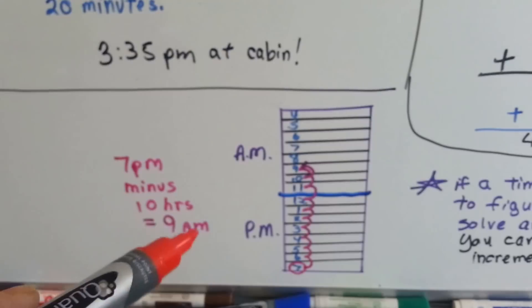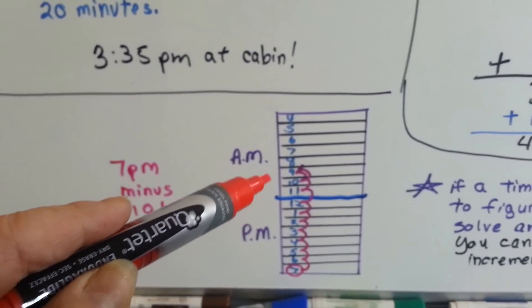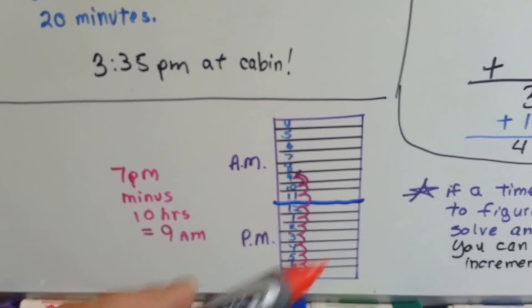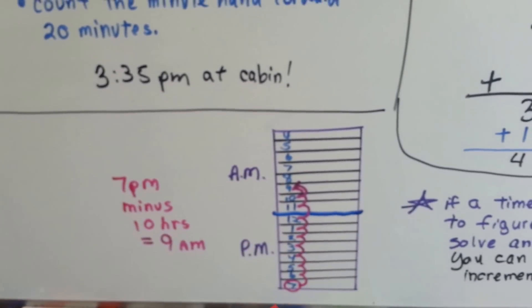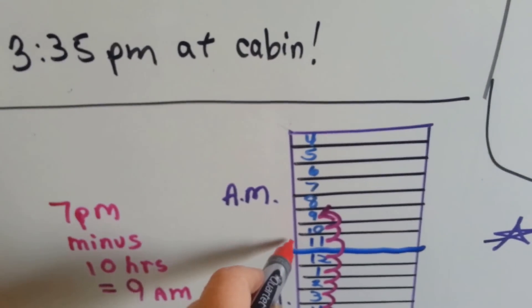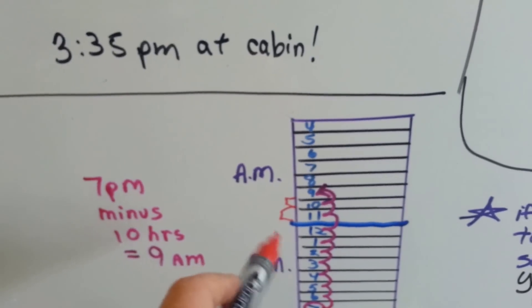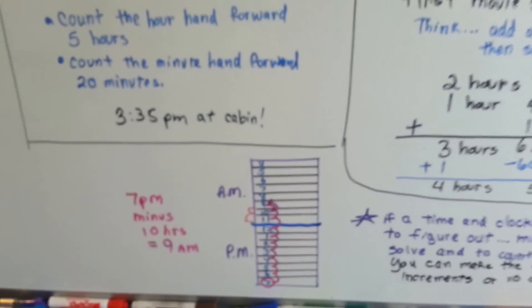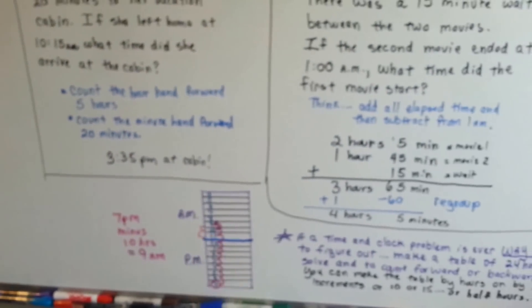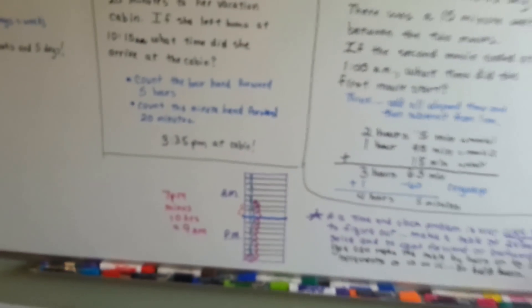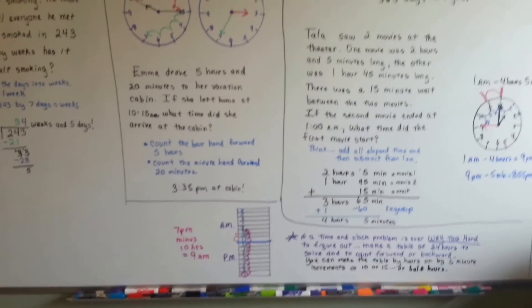And if we needed to do it in increments of five, then what we could do is find the hours and then separately find the minutes. Or we could have made a table that each one of these was 15 minutes instead of an hour. Or five minutes. Whatever the increment is that you need. So don't always think that you have to use a round clock to answer your clock problem. Sometimes a table is a better help.